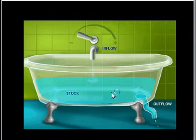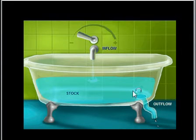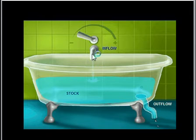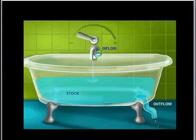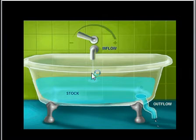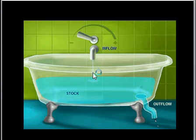The bathtub represents the atmosphere, the water in the bathtub represents the carbon dioxide, and the tap represents the emissions from the planet — natural emissions of carbon dioxide, and the relatively small amount of additional carbon dioxide that industrial civilization is emitting, but which is having a huge effect on the concentration of carbon dioxide in the atmosphere.